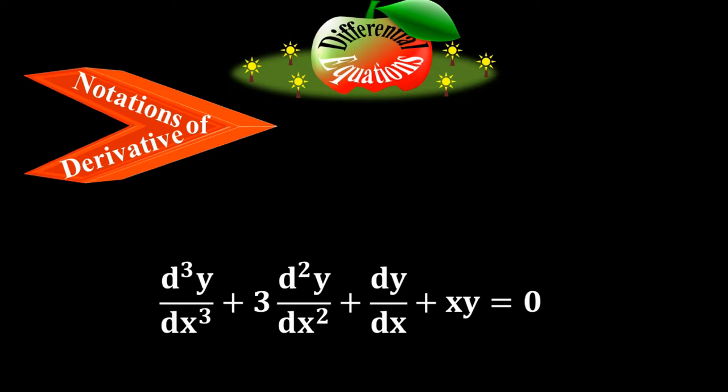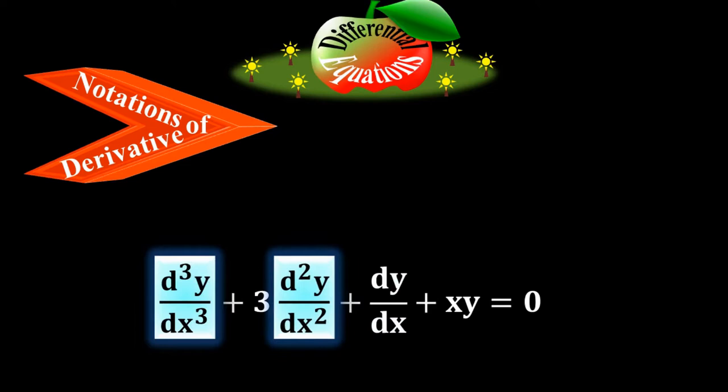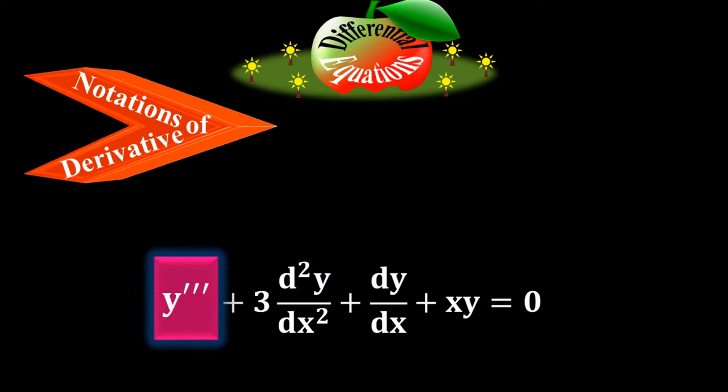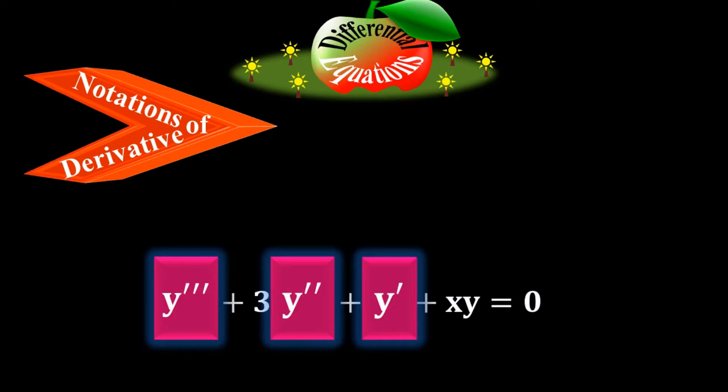These were just different notations for derivative terms. You can use any notation. Normally we use d³y/dx³, d²y/dx², and dy/dx. Sometimes you may encounter Lagrange's notations y-triple-prime, y-double-prime, and y-prime. These two are the most common notations you will come across.